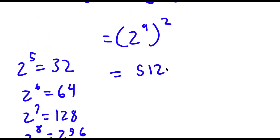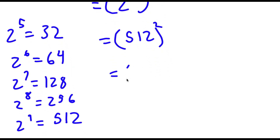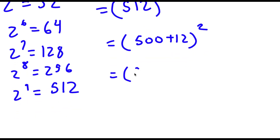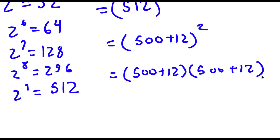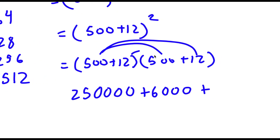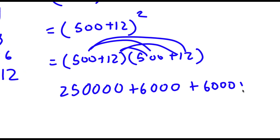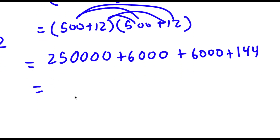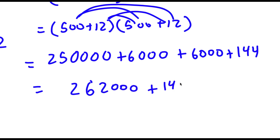So now I have 512 squared. To solve this, I'll rewrite 512 as 500 plus 12, so I have (500 plus 12) times (500 plus 12). Distributing: 500 times 500 is 250,000, plus 500 times 12 is 6,000, plus 12 times 500 is 6,000, plus 12 times 12 is 144. Adding all of these: 250,000 plus 6,000 plus 6,000 is 262,000, plus 144 equals 262,144. So this is my answer.